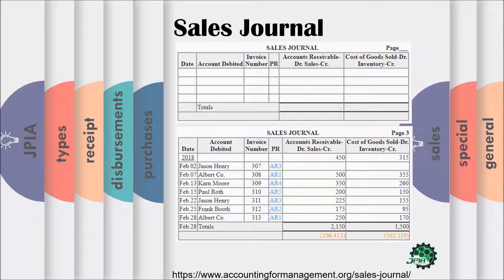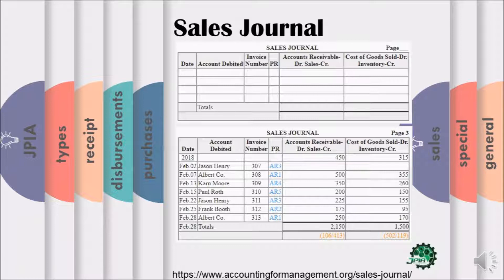Below is an example of how the sales journal is prepared. Here is an example of a sales journal — makikita ninyo kung paano siya na-prepare. Una, sa date, makikita ninyo na yung first row ay yung 2018, then yung month na February, and the day na 2. Dun sa katabi nun, sa account debited, ilalagay ninyo kung sino yung binantahan ninyo. Sa example dito, si Jason Henry. Then yung sunod is yung invoice number, na makikita ninyo dun sa number na nasa source documents. Then the folio number. Then one column ng accounts receivable debit and sales credit. Makikita ninyo na pinagsama na yung accounts receivable debit and sales credit, kasi parang sila naman yung laging magka-partner — para isang record na lang din ng amount nila. So example, nung kay Jason Henry, ay yung 450, kaya dapat dito kapantay nung 450 yung name ni Jason Henry.